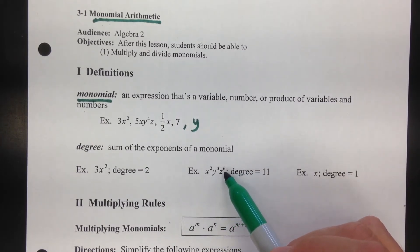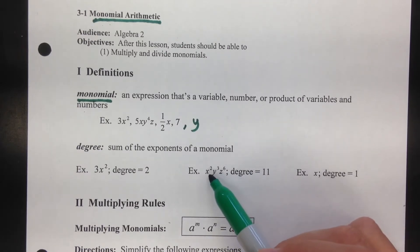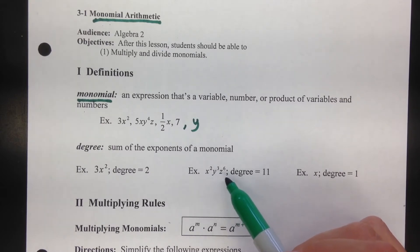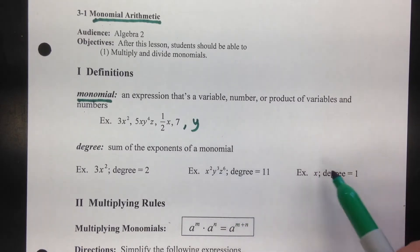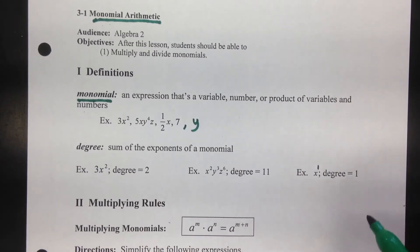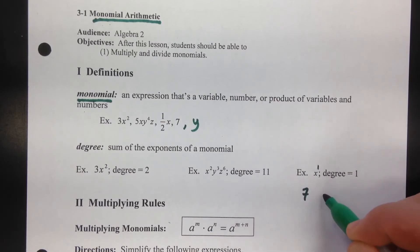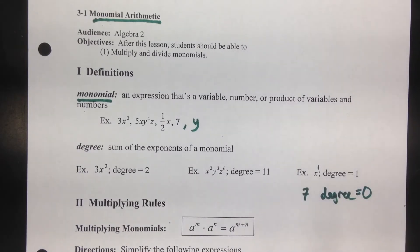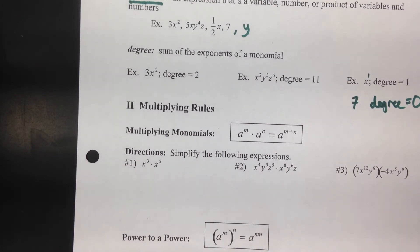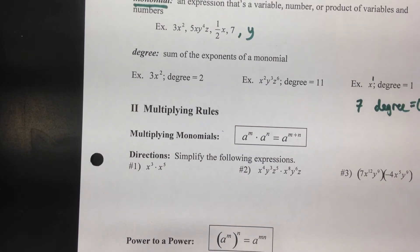For x squared y to the third z to the sixth, if you add the exponents the degree is 11 — but I can't combine those variables into x to the 11th or y to the 11th; the degree is just 11. If you just have x, that's x to the 1st so the degree is 1. If you just have a number like 7, the degree is 0 because that's like x to the 0.